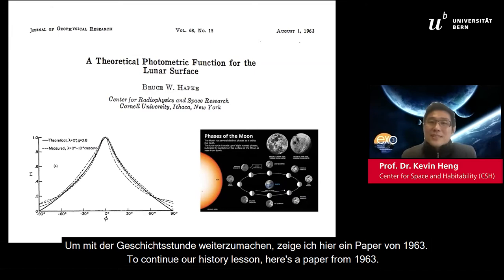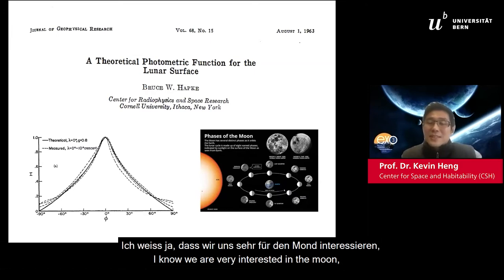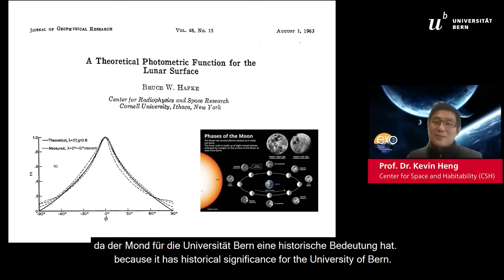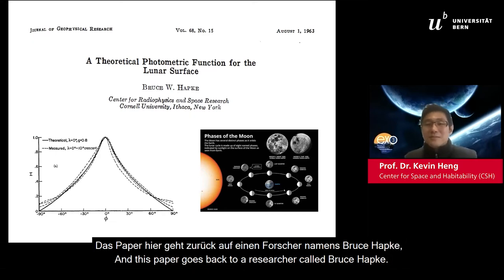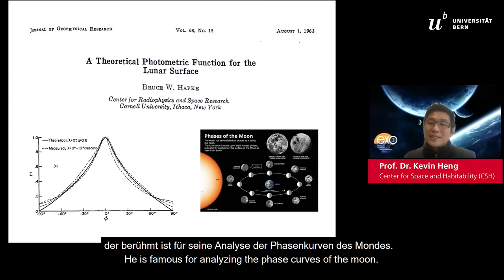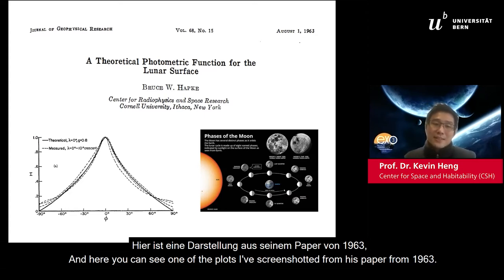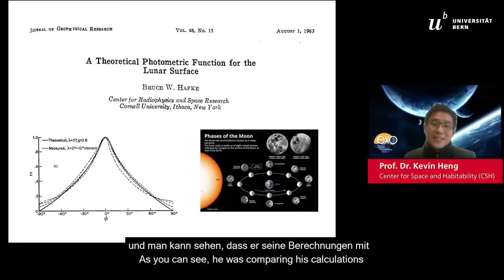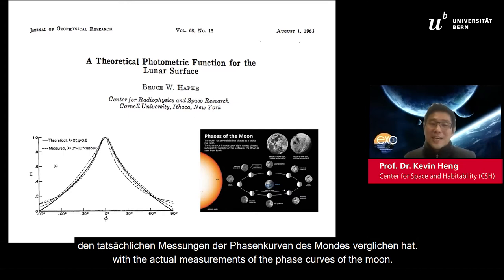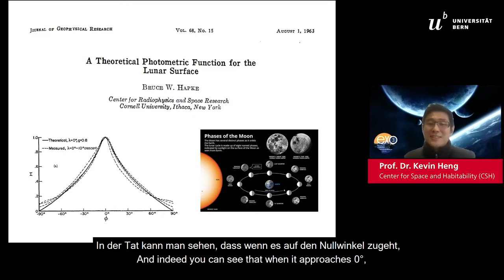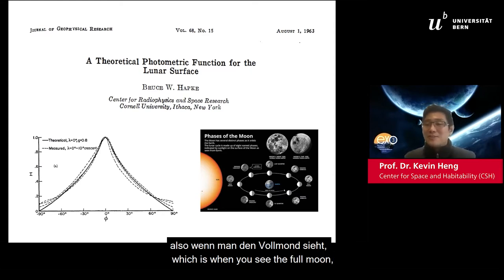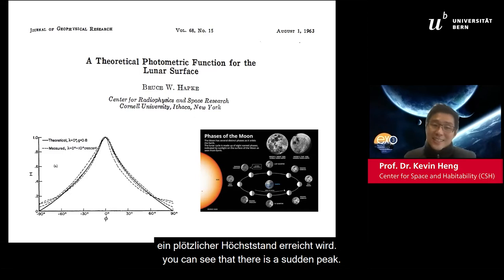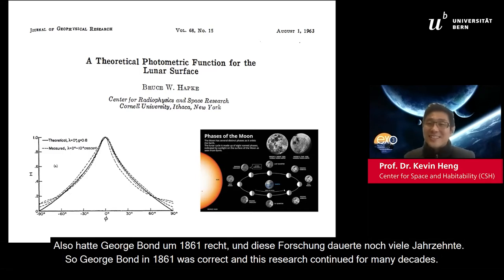Here's a paper from 1963. This goes back to a researcher called Bruce Hapke, who is famous for analyzing the phase curves of the moon. Here's one of the plots from his paper. You can see he was comparing his calculations with the actual measurements of the phase curves of the moon. Indeed, when it approaches angle zero — the full moon — you can see there's a sudden peak. So George Bourne in 1861 was correct, and this research continued for many decades.